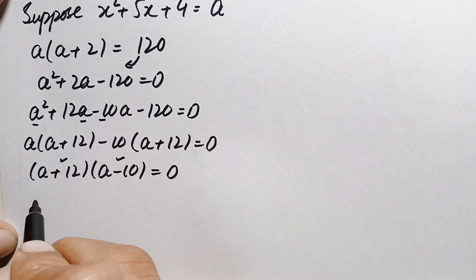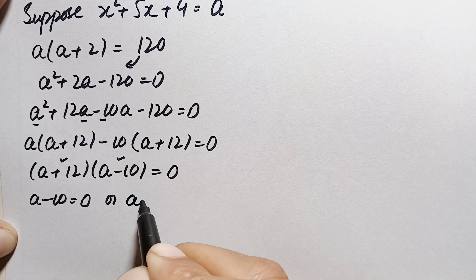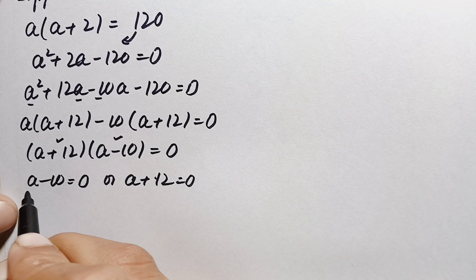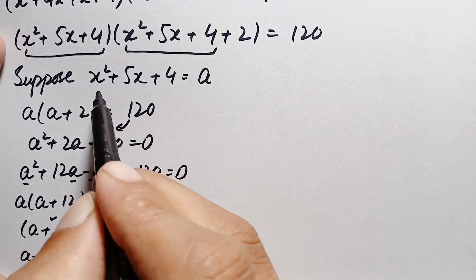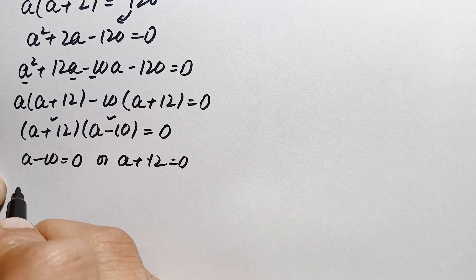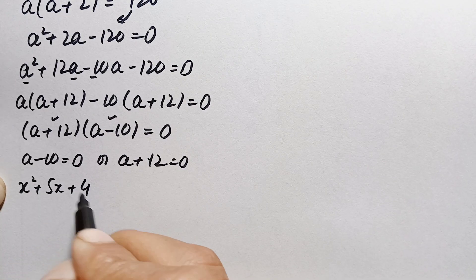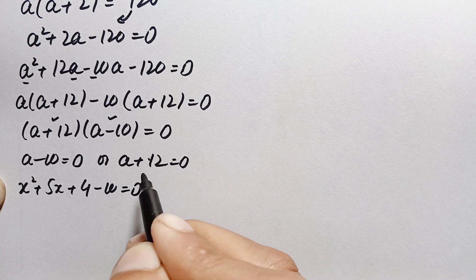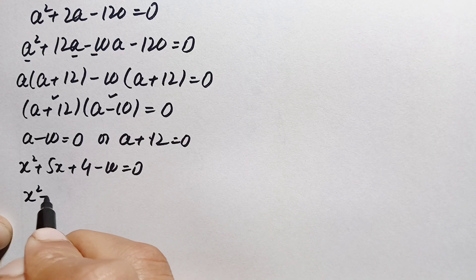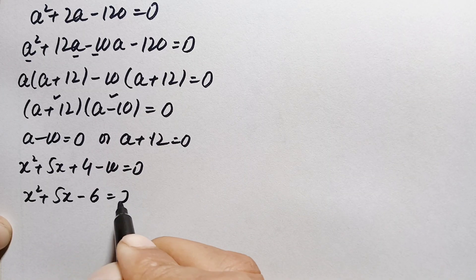Since the product is zero, either a−10 = 0 or a+12 = 0. Now we replace a with x²+5x+4. From a−10 = 0: x²+5x+4−10 = 0, which simplifies to x²+5x−6 = 0.